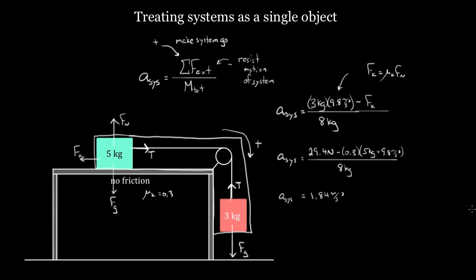You have to be careful: what this trick really gives you is the magnitude of the acceleration. Since positive forces are ones that make the system go and negative forces resist motion, the result is just a magnitude. Individual boxes may have positive or negative accelerations depending on their direction of motion. So the five kilogram mass accelerating to the right has a positive acceleration of 1.84 meters per second squared, while the three kilogram mass accelerating downward has a negative acceleration of 1.84 meters per second squared.